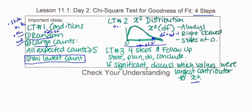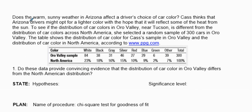We're going to go through an example now. Does the warm, sunny weather of Arizona affect drivers' choices of car color? Cass thinks Arizona drivers might prefer lighter colors to reflect heat. To test if the distribution of car colors in Oro Valley near Tucson differs from North America, she selects a random sample of 300 cars. The table shows the distribution of car colors from her sample.